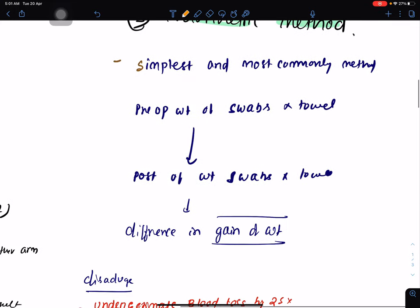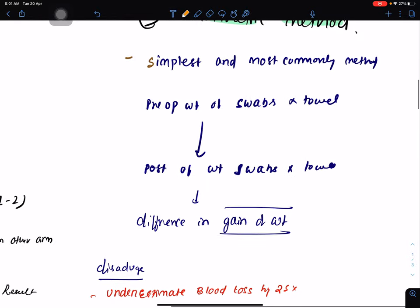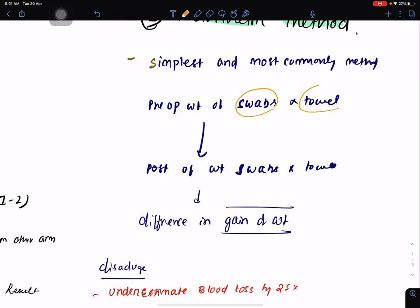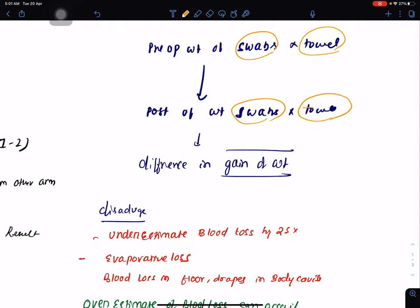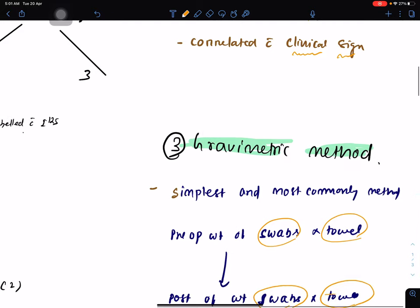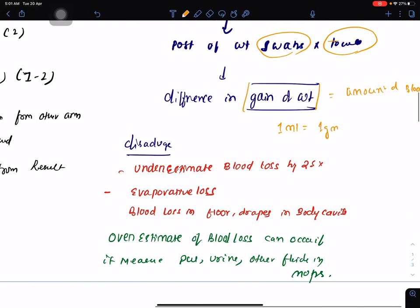Gravimetric method is the simplest and most commonly used method. Preoperative weight of the swabs and towels are taken, and after surgery, postoperative weight of the swabs and towels are taken. The difference, the gain of weight, is equal to the amount of blood loss. One ml equals one gram of blood.